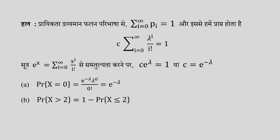And this probability can be calculated: one minus the probability that X equals zero, one, or two.